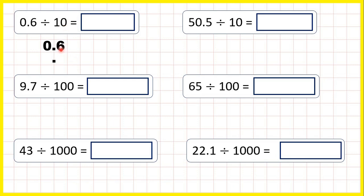So if we copy down this six, one square to the right, and do the same with this zero, we get 0.06. But we have an empty ones column, and we can never have an empty ones column, so we need to write a 0 in this empty square to give us our answer: 0.06.